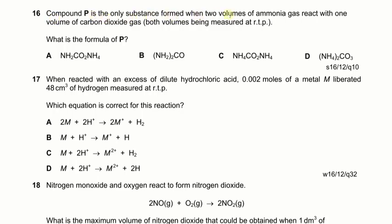Next: compound P is the only substance formed when 2 volumes of ammonia react with 1 volume of CO₂. What is the formula of P? We have 2 NH₃ + CO₂. That gives 2 nitrogen atoms and 6 hydrogen atoms in the product. Checking the options: option A has 2 nitrogens and 6 hydrogens (2+4). The answer is A.